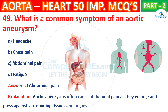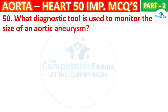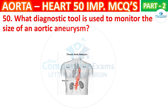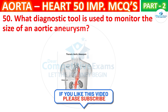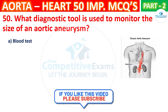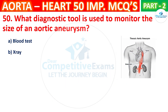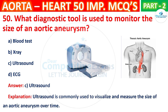Question No. 50. What diagnostic tool is used to monitor the size of an aortic aneurysm? The options are: Blood test, X-ray, Ultrasound, or ECG. The correct answer is C, that is ultrasound. Ultrasound is commonly used to visualize and measure the size of an aortic aneurysm over time.